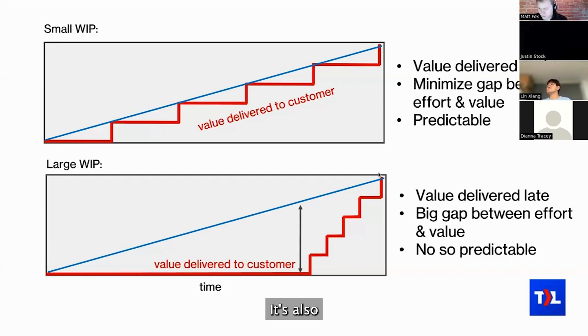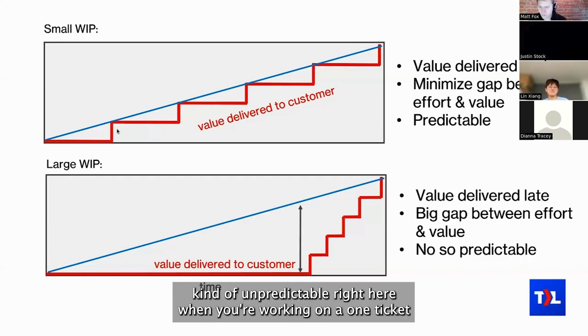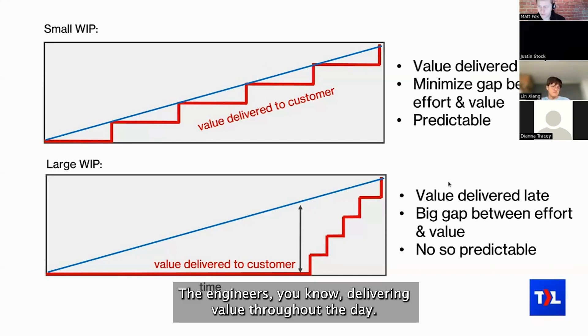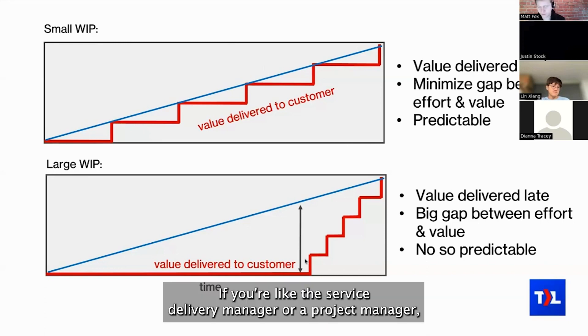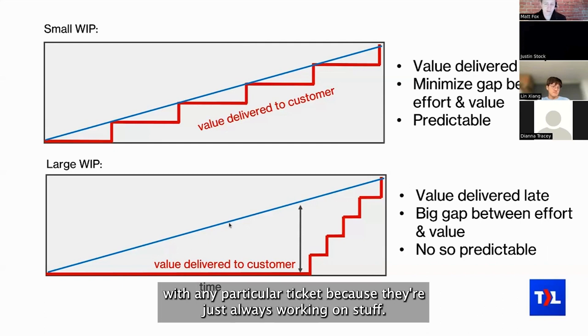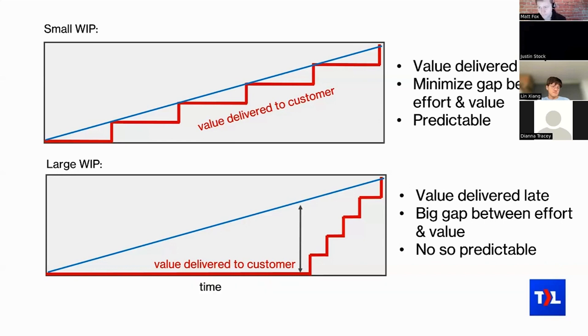It's also kind of unpredictable. When you're working on one ticket at a time—small work in progress—it's fairly predictable. The engineers are delivering value throughout the day, whereas with a large work in progress, it's very unpredictable. If you're like the service delivery manager or a project manager, you don't know when they're going to be finished with any particular ticket because they're just always working on stuff. They're not delivering much until the very end.